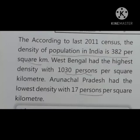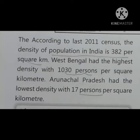According to the 2011 census, the density of population in India is 382 persons per square kilometer. West Bengal had the highest density, with 1030 persons per square kilometer. Arunachal Pradesh had the lowest density, with 17 persons per square kilometer.